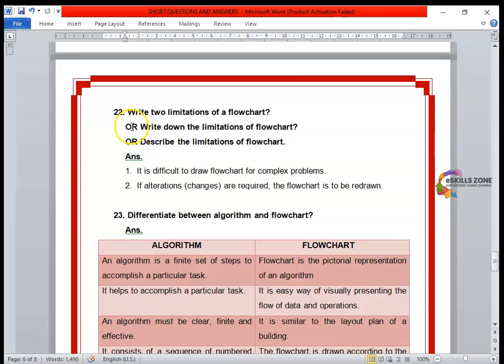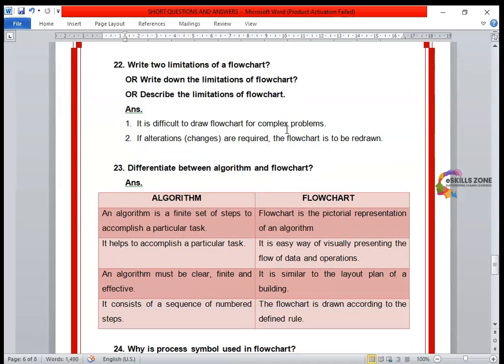Next question, number 22. Question is, write two limitations of flowchart. The other way of asking this same question: write down the limitations of flowchart, or describe the limitations of flowchart. The answer is: Number one, it's difficult to draw flowchart for complex problems. Number two, if alterations or changes are required, the flowchart must be redrawn. So these are the two limitations of flowchart.